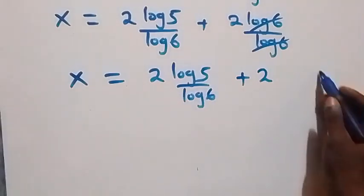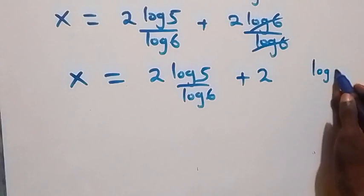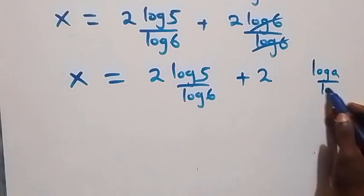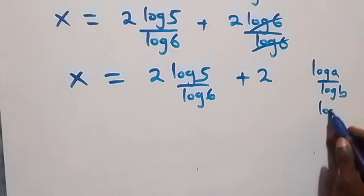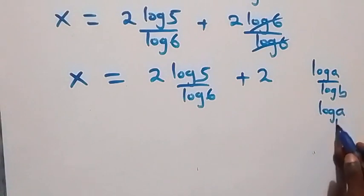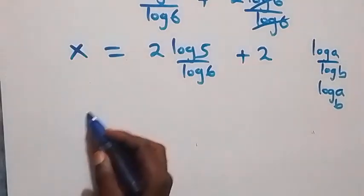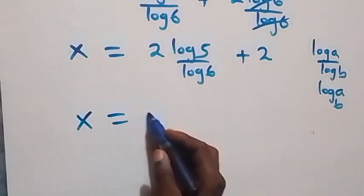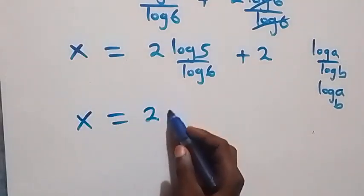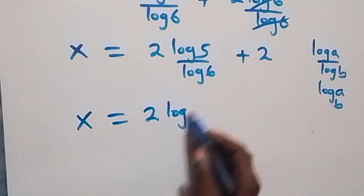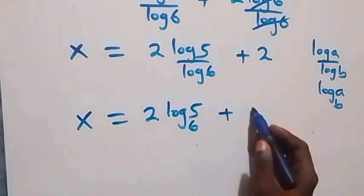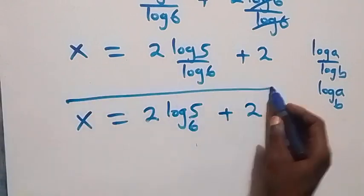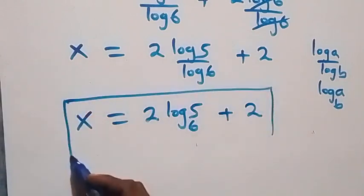Using the change of base formula — log a over log b equals log a to base b — we can write the final solution as x equals 2 log 5 to base 6 plus 2.